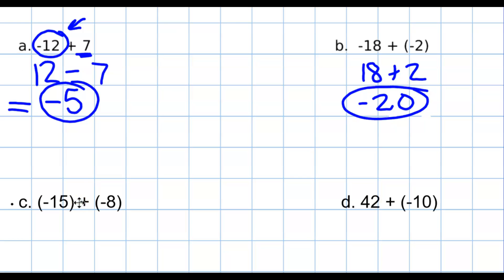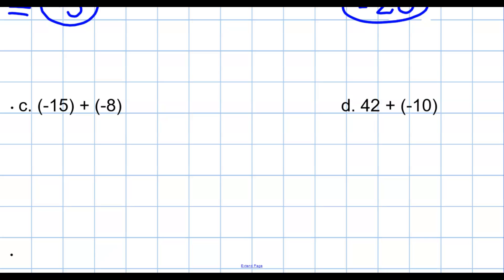Okay, now you try. Try these two problems. Alright, so in this first example, or I should say the third example, negative 15 and negative 8, the signs are exactly the same. So you're just going to add 15 plus 8 to get 23, and then keep the sign, which is negative.